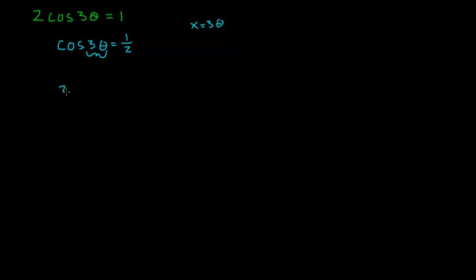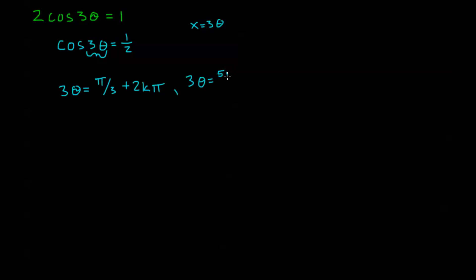We know that cosine will be 1 half when 3 theta is equal to pi over 3 plus 2k pi. And we also know that cosine of 3 theta equals 1 half when 3 theta is equal to 5 pi over 3. That's our value in quadrant 4, the other quadrant where cosine is positive that has a reference angle of pi over 3.